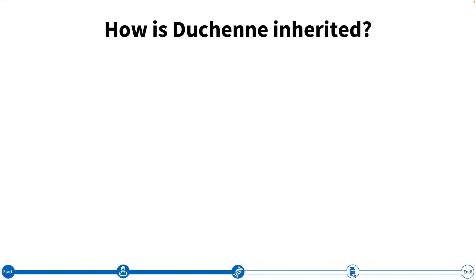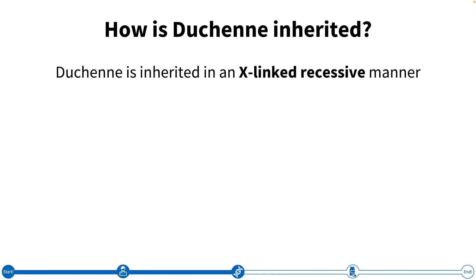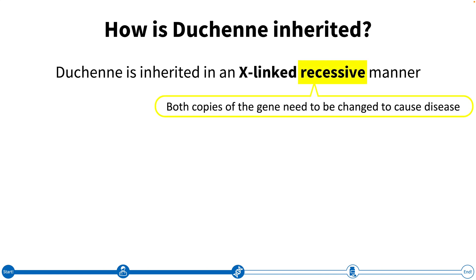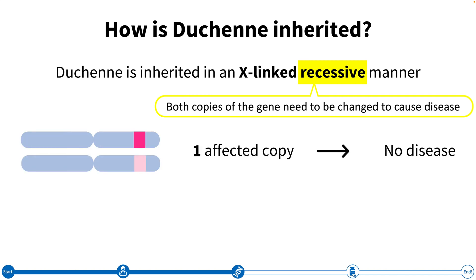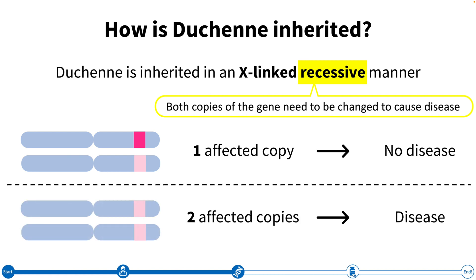Duchenne is inherited in what is called an X-linked recessive manner. By recessive, we mean that both copies of the gene need to be changed for the individual to have the disease. So if we look at our pink gene again, someone who has only one copy with the change, shown in light pink, will not have the disease. If an individual has two light pink or affected copies, they will have the disease.